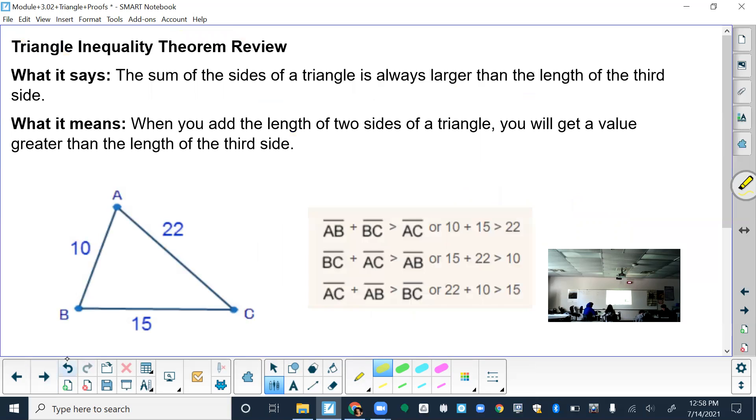Next we have triangle inequality theorem review. This presentation has a lot about this theorem. Just bear with me, a lot of highlighting. But this one says that the sum of two sides of a triangle is always larger than the length of the third side. So it doesn't matter what two sides you pick. If you add any two sides, it'll always be longer than the third side. Here's an example that it can be any two of the sides.